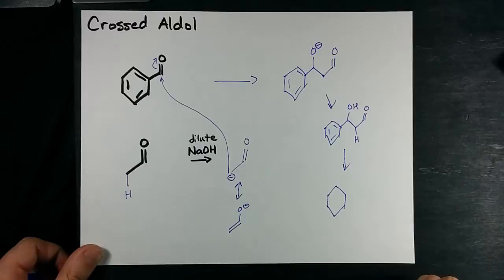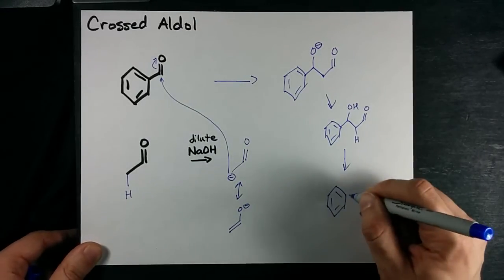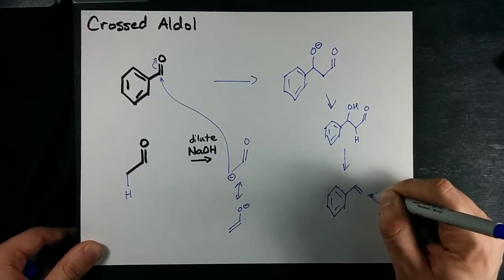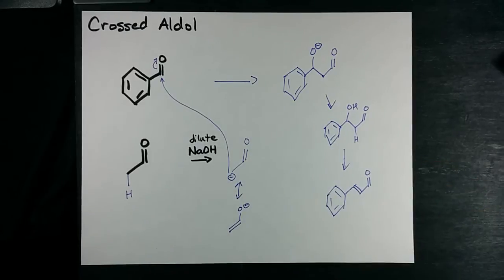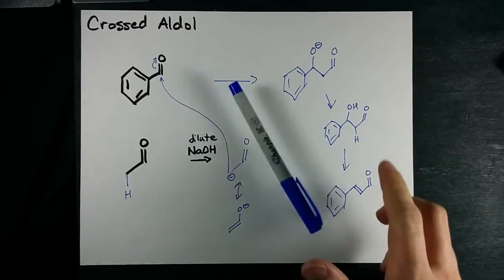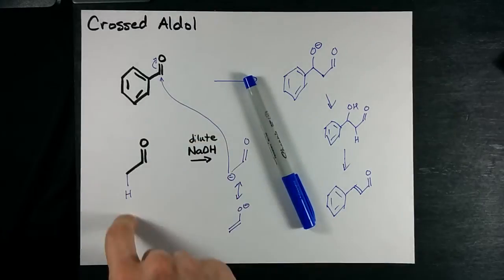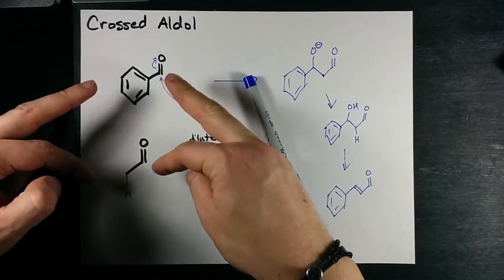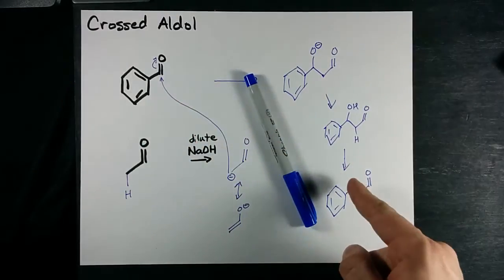Remove one more of these alpha hydrogens and we end up with an alpha-beta unsaturated aldehyde. Oh yes, and it's a crossed aldol reaction because we've taken two different aldehydes and made the magic happen.